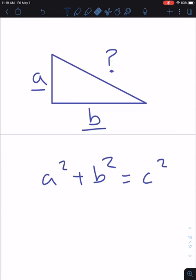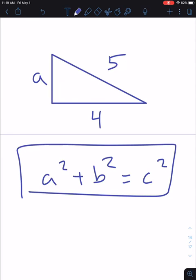But let's say this time we know what this leg is, let's say it's 4, and we know that the hypotenuse is 5, but we don't know what this leg is. There's a very simple way to do this. We already know what Pythagorean's theorem is.